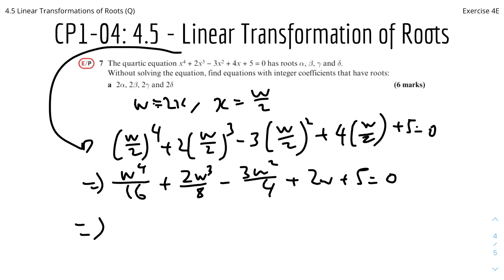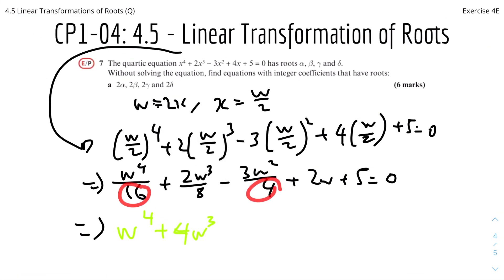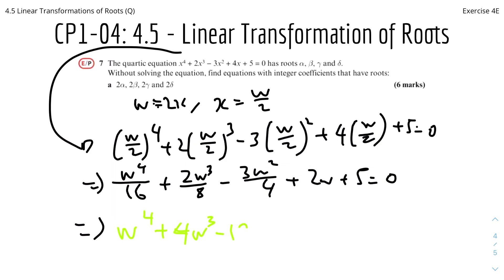Multiplying everything by 16 to get integer coefficients: w to the power 4 plus 4w cubed — because 2 times (16 over 8) equals 4 — minus 12w squared plus 32w plus 80 equals 0. And that's the final answer.